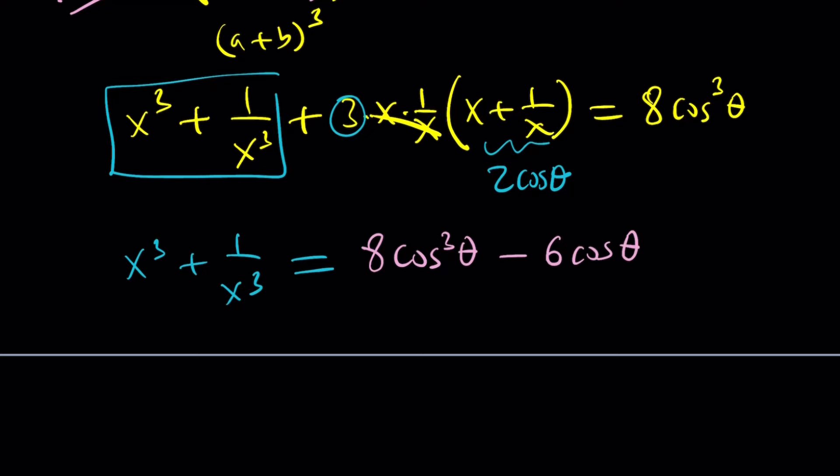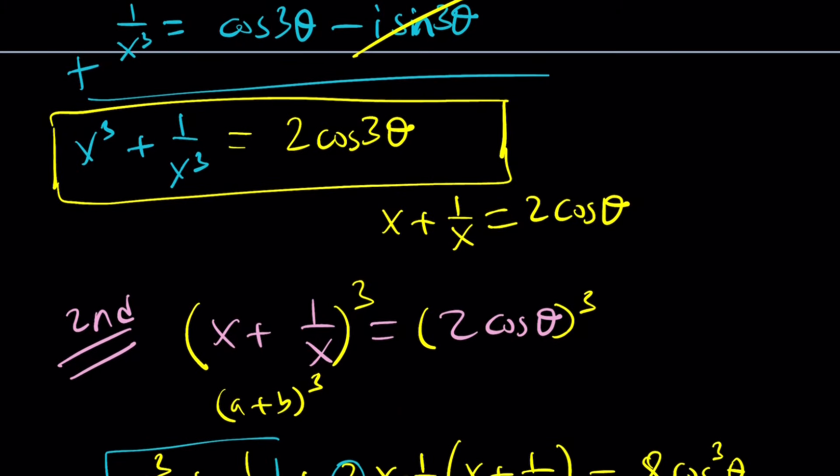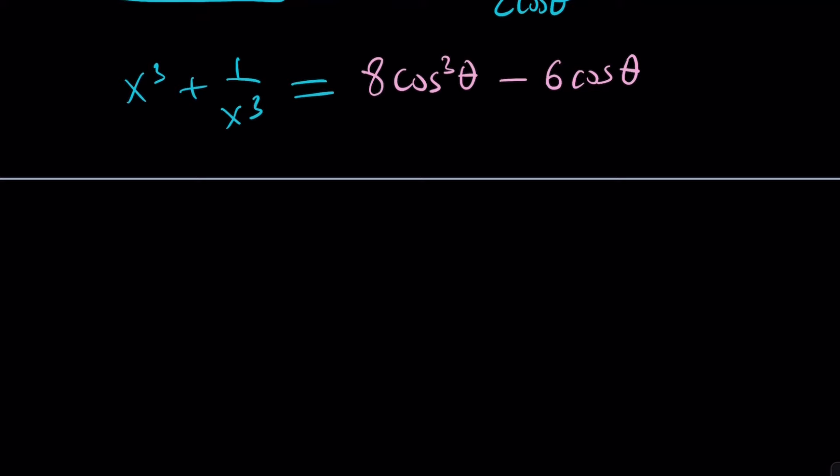That's going to equal 8 cosine cubed theta minus 6 cosine theta. Now, you might be wondering, didn't we get something else like 2 cosine 3 theta? Yes and no. They're not different, because if you take out a 2, this becomes 4 cosine cubed theta minus 3 cosine theta, and hopefully you are familiar with the triple angle formulas, because this is just an expression for cosine 3 theta, which gives us the exact same solution.